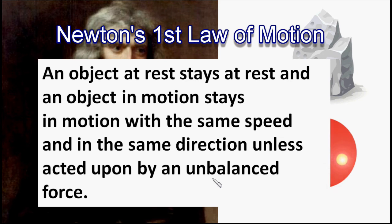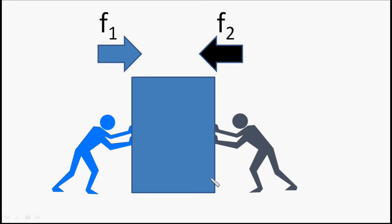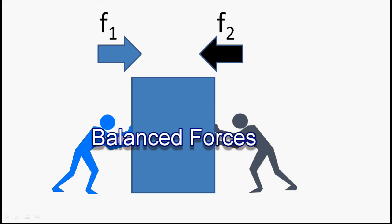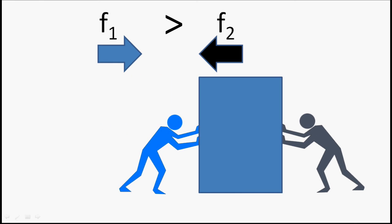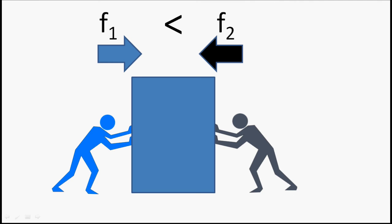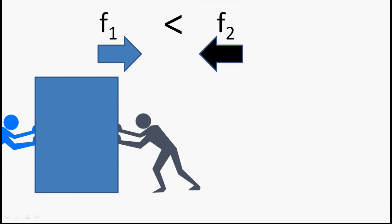The unbalanced force part is very important. Because if the net force is zero, then it doesn't make any change. Like two persons pushing this box with the same force but from opposite directions. So both forces are cancelling out each other. These are balanced forces, as they are cancelling out each other or balancing each other. So the net force is zero. If one of them applies more force, then both forces would not cancel out each other entirely. So this is an unbalanced force.